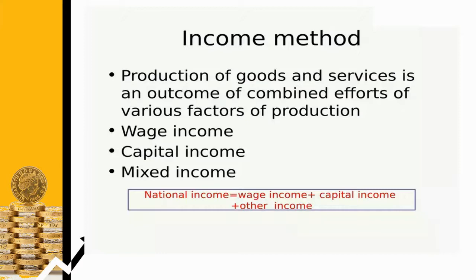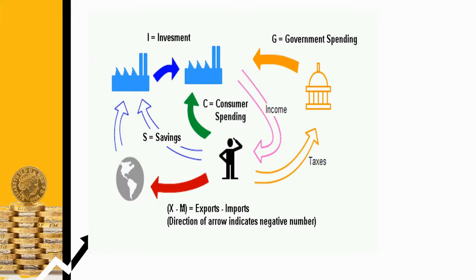Besides these, some self-employed persons who employ their own labor and capital — such as doctors, advocates, CAs, etc. — their income is called mixed income. The sum total of all these factor incomes is called NDP at factor cost, also called the income method. This method involves all sorts of income derived in an economy: wage income, capital income, and mixed income. Data on income from abroad is also accounted under the income method.